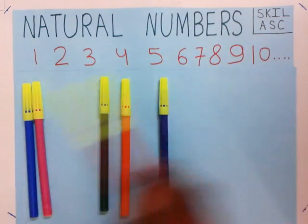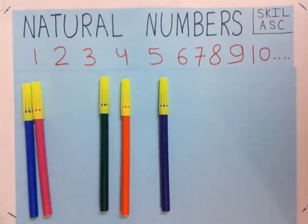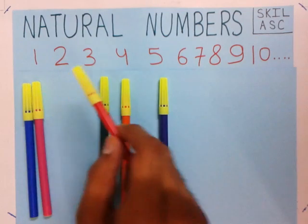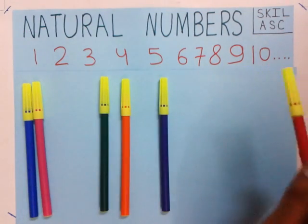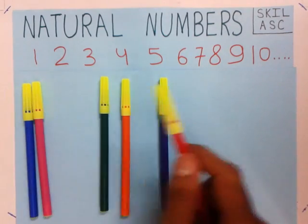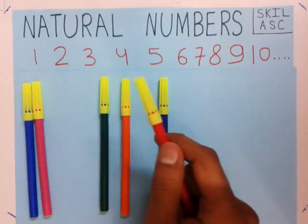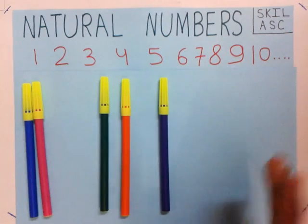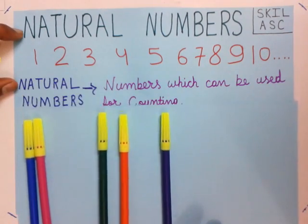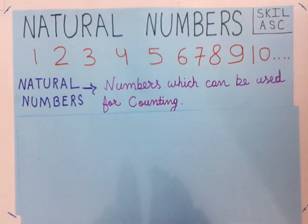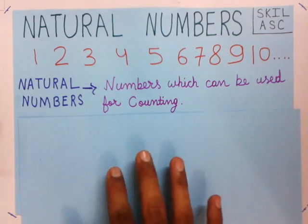These numbers we use while counting are natural numbers. While we count, we say 1, 2, 3, 4, 5, 6, 7, 8, 9, 10, 11, 12, 13, 14, and so on. All these numbers are natural numbers. We can define natural numbers as: numbers which can be used for counting are natural numbers.